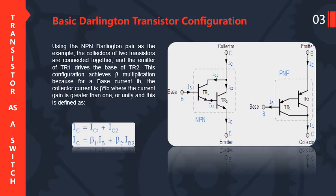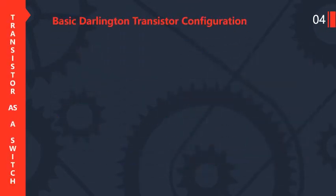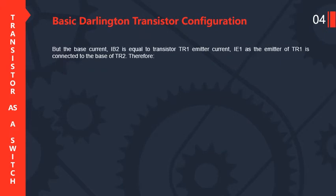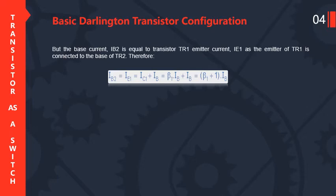So IC equals beta1 times IB plus beta2 times IB, where IB is the base current. The base current IB2 equals the emitter current IE1 of transistor TR1. Since the emitter of TR1 is connected to the base of TR2, IB2 equals IE1 equals IC1 plus IB.